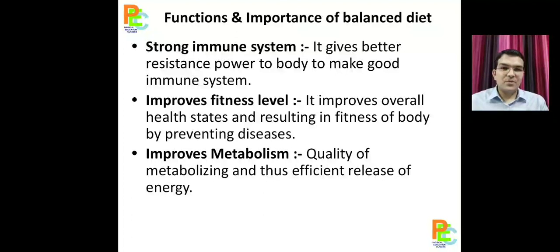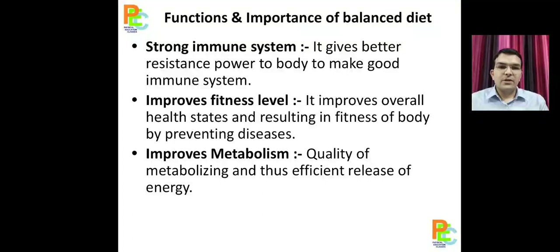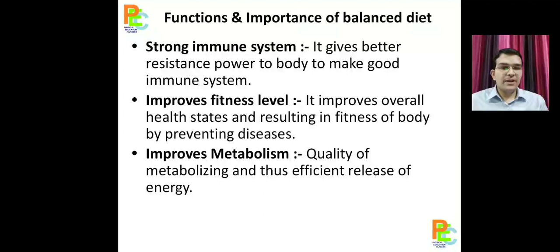Next is improved fitness level. The fitness level will be better if we are taking a proper diet and proper nutrition. With physical activities and regular exercises, fitness will obviously improve — it is not possible just with diet alone, we need to do regular exercises as well. Next is improved metabolism. A metabolic process is the process which gives energy and processes our body energy system. With a proper diet, as all other functions and systems work well, the metabolic process also works properly.